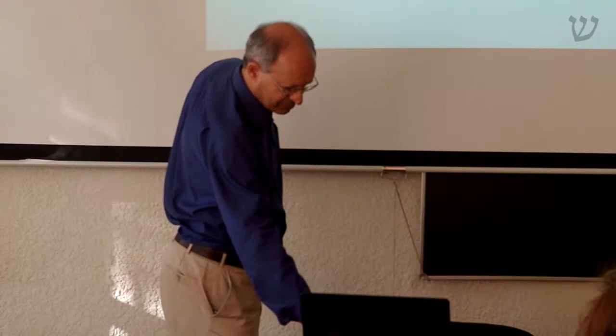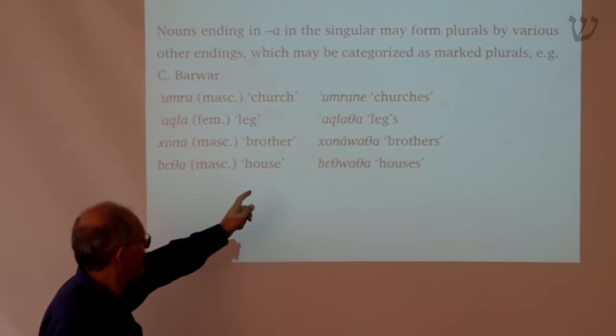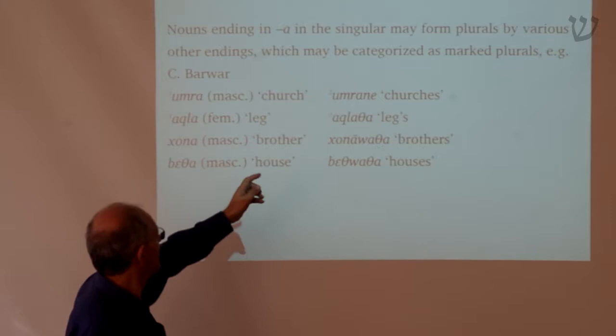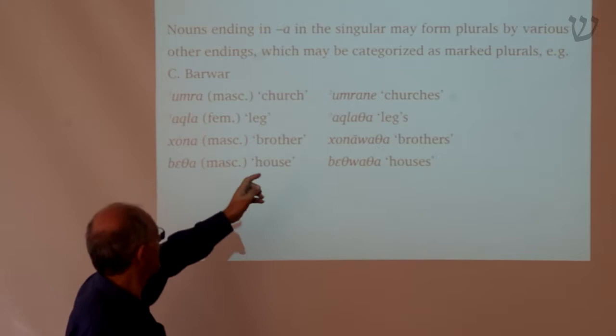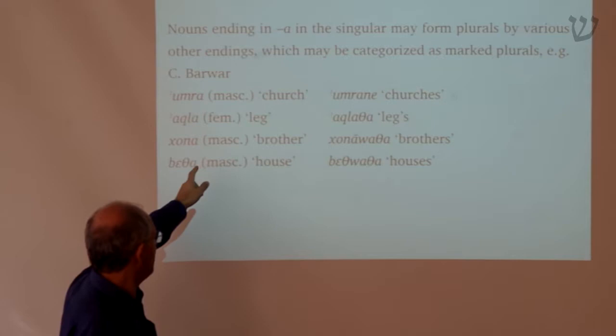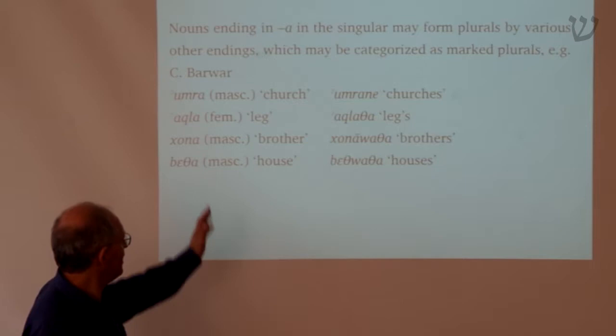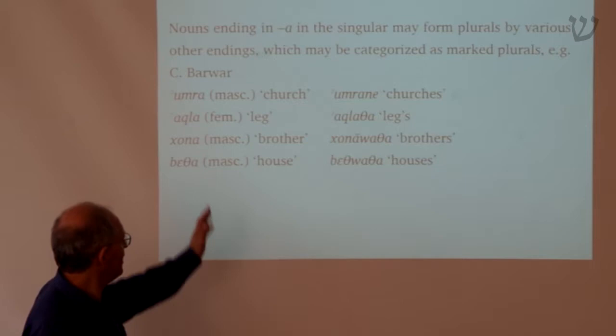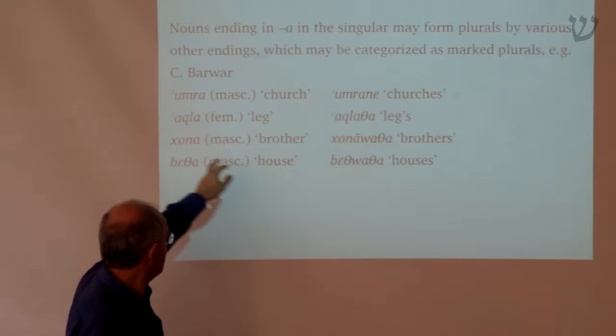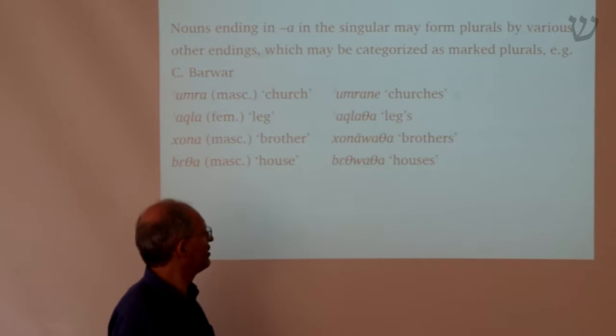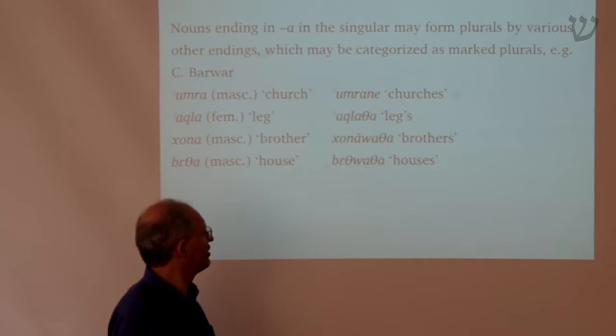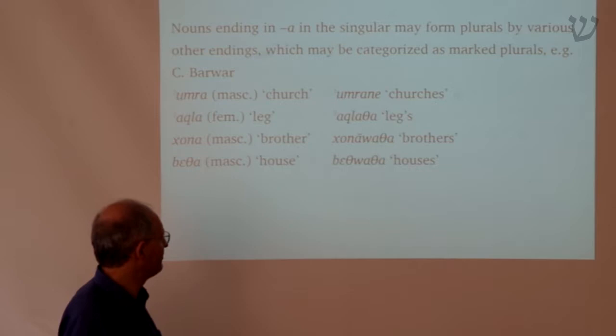Looking at other plural endings: 'umrah' (church) takes the ending 'ana' to express the plural. 'Akhla' (leg) → 'akhlaatha' (legs), where the ending is 'artha'. 'Horna' (brother) → 'hornawatha' (brothers). 'Betha' → 'bethwartha' (houses). These are less frequent endings. In fact they have become associated with particular lexical groups — for example, 'awatha' is an ending mainly used with kinship terms, so 'ma-watha' for 'uncle/uncles' and 'baba-watha' for 'father/fathers'.